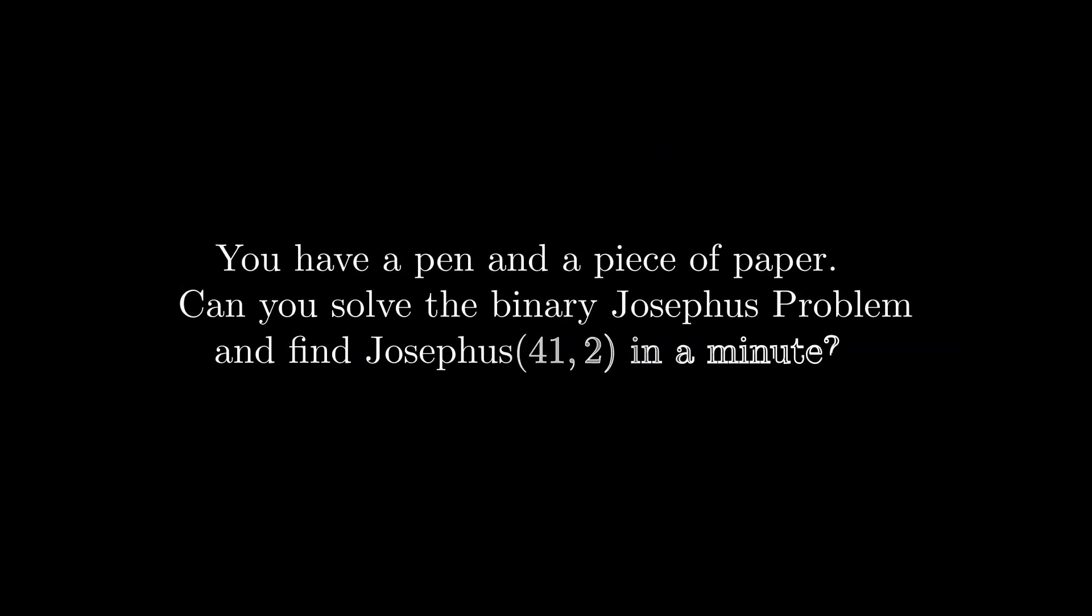Imagine that you are in a cave, along with 40 other rebels, and this time, the rules have changed. Each second rather than each third rebel will be killed. Even with a fast algorithm we just learned, you probably won't have time to quickly find Josephus(41, 2). You have a piece of paper and a pen. Can you find Josephus(41, 2) in one minute? Or can you write a single line Python code for solving the binary Josephus problem?